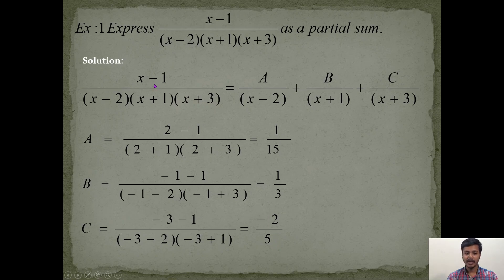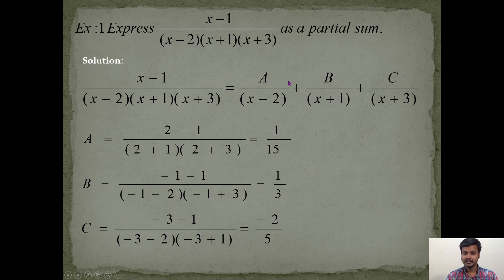Finally, write the equation with A = 1/15, B = 1/3, and C = −2/5 substituted in. The method used here — covering (x − 2), then (x + 1), then (x + 3) to find A, B, and C — is called the cover-up method. One important remark: the cover-up method is applicable only when you have different factors in the denominator.